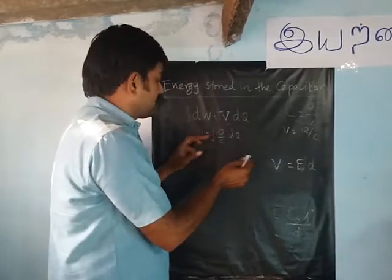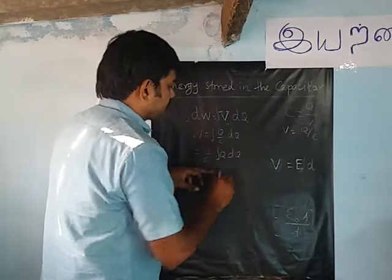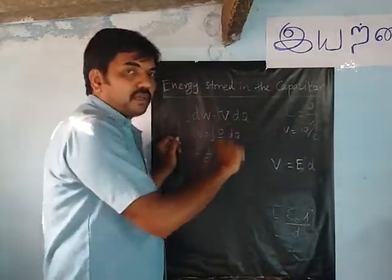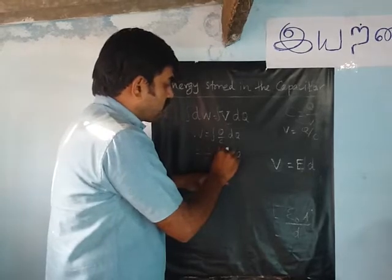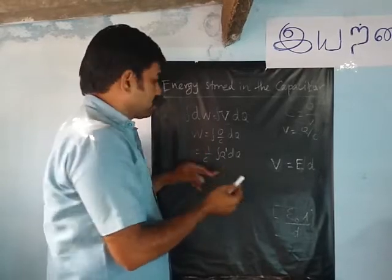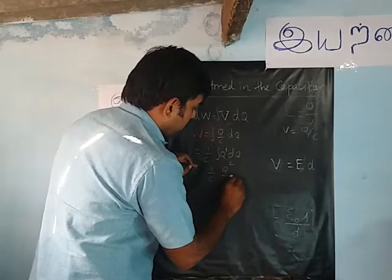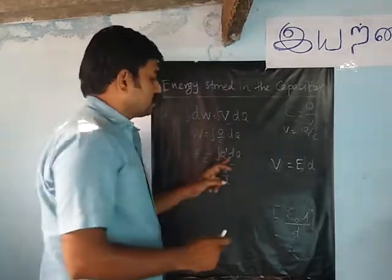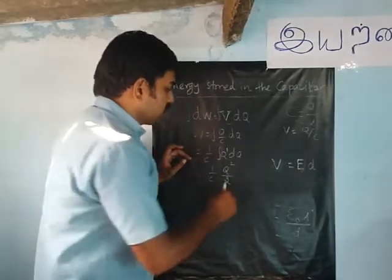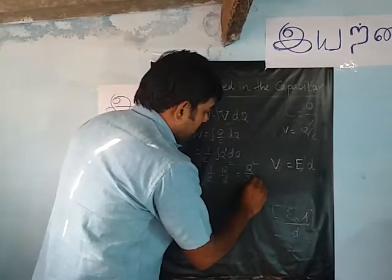Using the formula for x power n dx, which equals x power n plus 1 by n plus 1, we integrate q dq. Since q is power 1, n plus 1 equals 1 plus 1 equals 2, giving q squared by 2. So w equals 1 by c into q squared by 2, which is q squared by 2c.